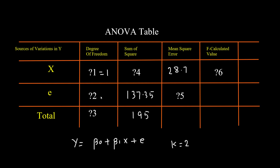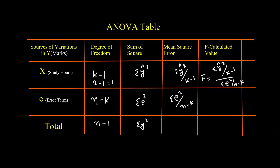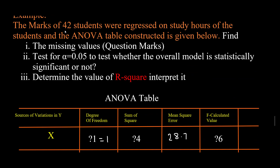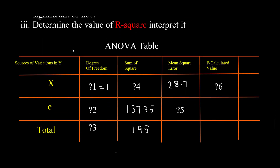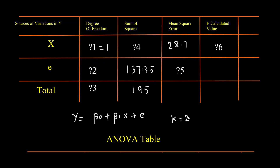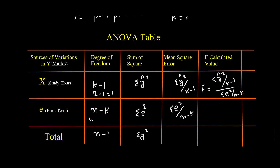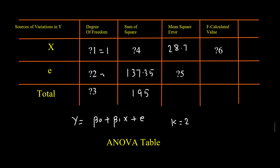The second missing value is the error degrees of freedom, which equals sample size minus the number of parameter estimates. We have 42 students, so n equals 42, and the number of parameter estimates equals 2. Therefore, n minus k equals 42 minus 2, which is 40. Question mark 2 equals 40. The third missing value is the total degrees of freedom — the sum of these two — which equals 41. Question mark 3 equals 41.